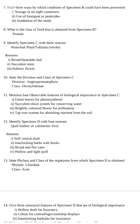Number 9: Identify specimen C with three reasons — it is a water leaf plant. Reasons: it has broad or spatulate leaves, succulent stem, and solitary flowers. Number 10: State the division and class of specimen C — division Spermatophyta, class Dicotyledonae. Number 11: State four observable features of biological importance in specimen C — green leaves for photosynthesis, succulent shoot system for preserving water, brightly colored flower for pollination, and tap root system for absorbing nutrients from the soil.